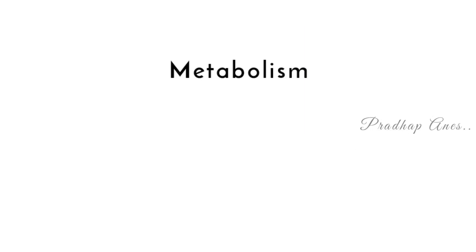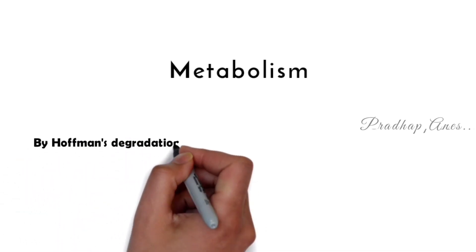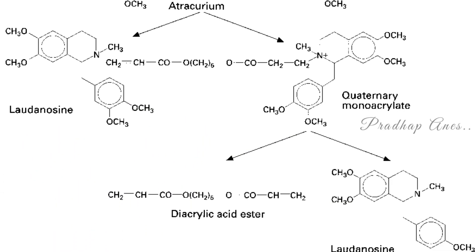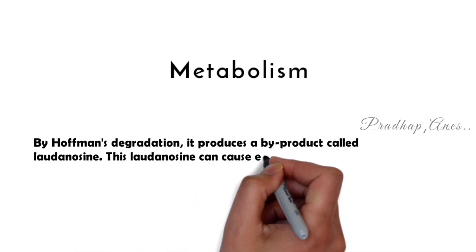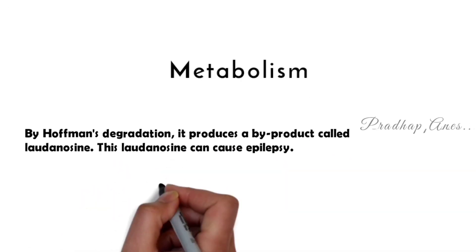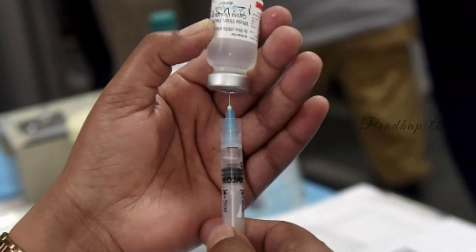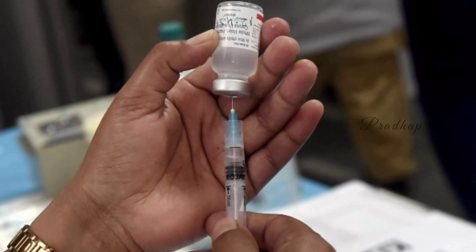Atricurium is metabolized by Hoffman's degradation. By Hoffman's degradation, it produces a byproduct called Laudanosine. This Laudanosine can cause epilepsy. But this happens only when we give a higher dose.